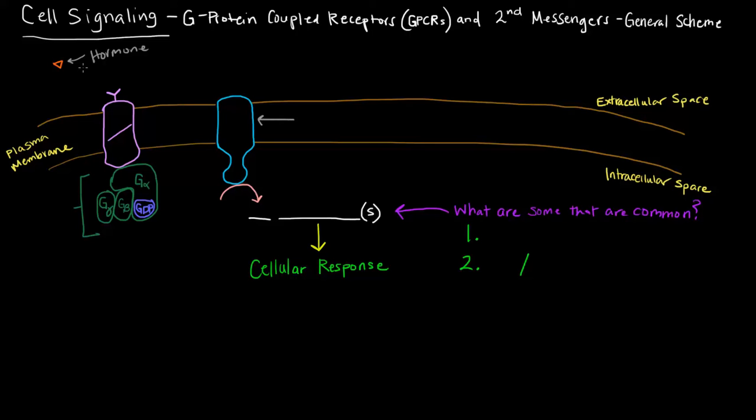We have a hormone, it's a polar hormone, and it's going to bind on the cell surface to a particular receptor. That receptor is right here drawn in purple. Since we're talking about G-protein coupled receptors, this purple protein here is specifically the G-protein coupled receptor, or GPCR.